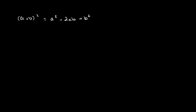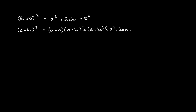We can use this to find what a plus b cubed is. When we solve for this, we get a plus b times a plus b whole squared, which equals a plus b times a squared plus 2ab plus b squared. When we open this up, we get a cubed plus 3a squared b plus 3ab squared plus b cubed.